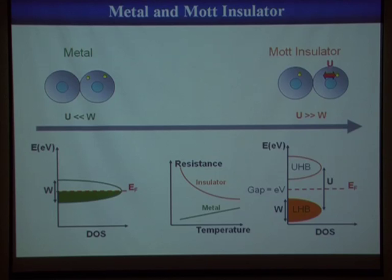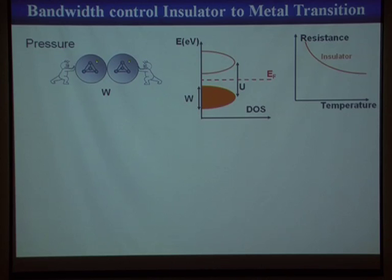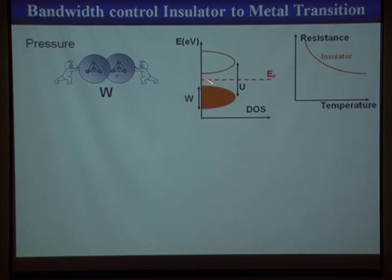A first way to break the Mott insulating state is to induce a bandwidth-control insulator-to-metal transition, and this can be done using pressure. When you apply pressure, you force atoms closer together, reinforce the overlap between orbitals, and therefore increase the bandwidth. At a certain point, the two subbands will come into contact, overlap, and you restore metallicity, inducing an insulator-to-metal transition.